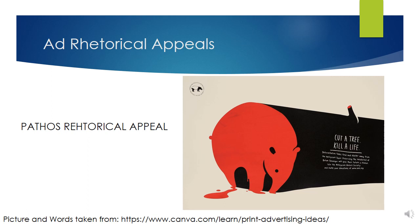The ad is effective because of the significant amount of pathos used. Through showing a cute tapir dying by the tree's death, it tugs on the audience's emotions and sympathy for tapirs. The audience would feel the need to act for the wrongdoing done to the tapirs. The words used in the ad — 'kill a life' and 'give their future a chance' — are emotionally appealing to the audience.